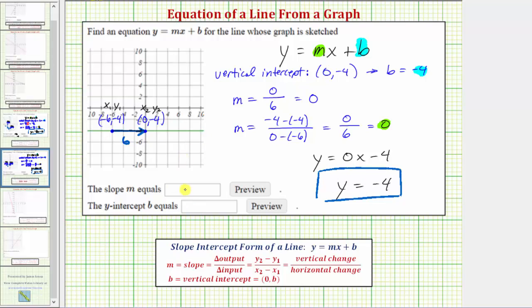So for our homework, we enter m equals zero and b equals negative four. I hope you found this helpful.